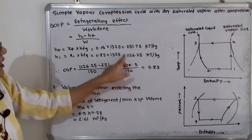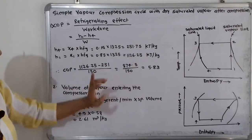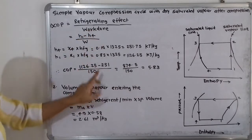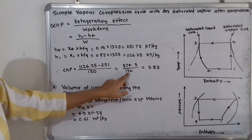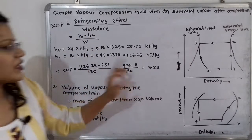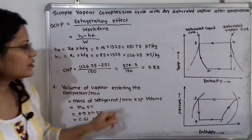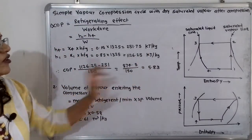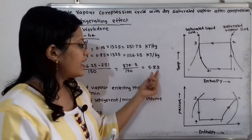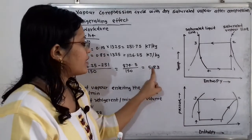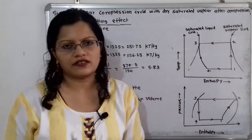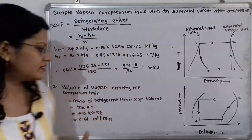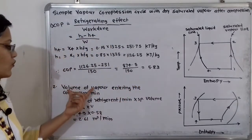Now we calculate COP: h1 minus h4 = 1126.25 − 251.75 = 874.5 kilojoule per kilogram, divided by work done = 150 kilojoule per kilogram. The units cancel, giving COP = 5.83.